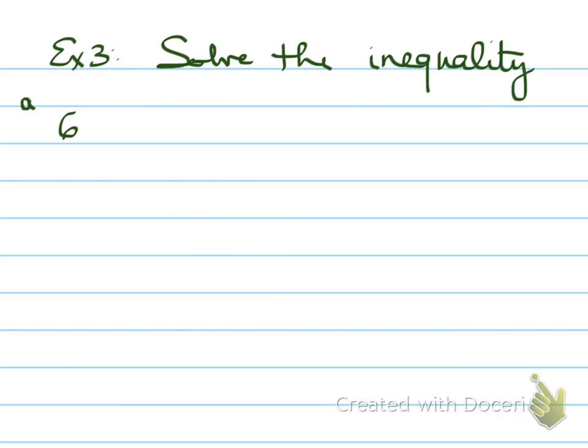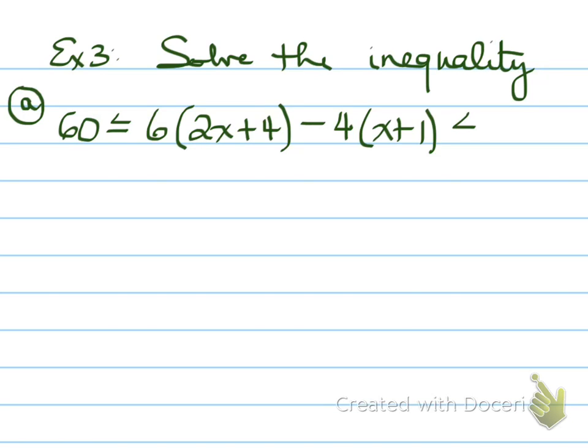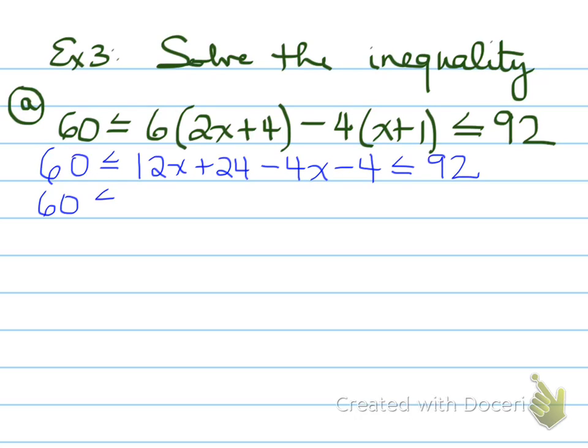Alright, let's try another one. Example number 3. You're asked to solve the inequality that looks like this. This is known as a double inequality. A double because there are inequalities on both sides. Your automatic instinct should be to expand this. Expand it and then collect the like terms.